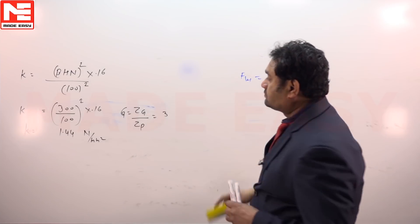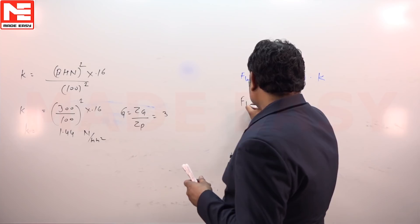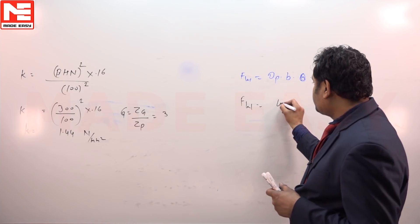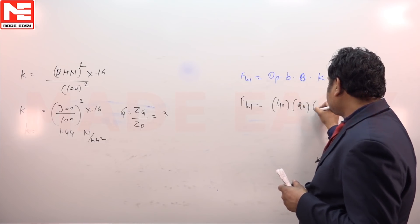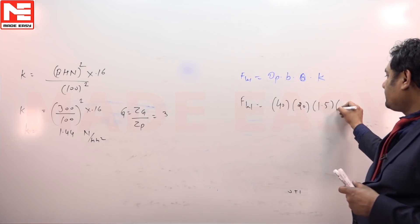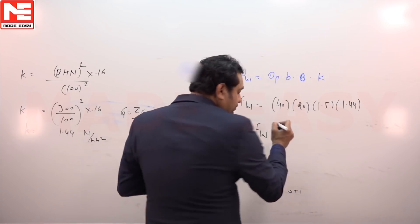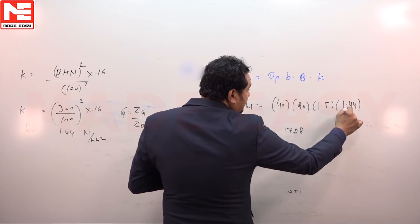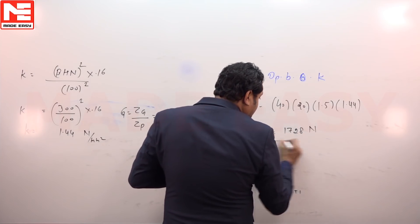Dp pitch diameter is 40, face width is 20, Q is 1.5, and K is 1.44. So wear strength is around 1728, and that unit is Newtons.